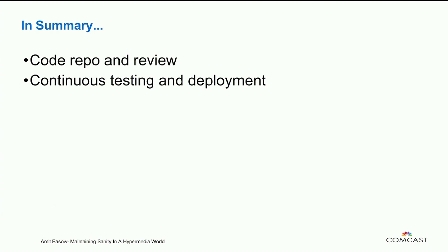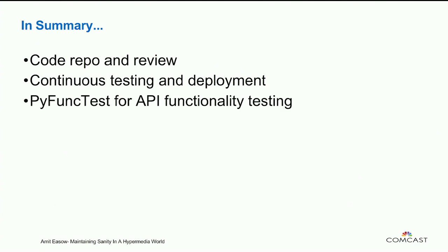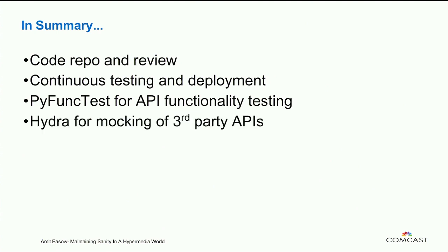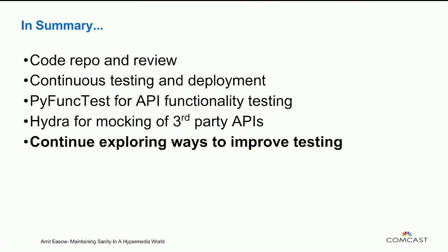In summary, we maintain sanity at Comcast by having a good code repository system and code review. We do continuous testing and deployment. We use Python tests for API functionality testing. We use Hydra for mocking of third-party APIs — and as I mentioned, WireMock is another good option. We are continuing to explore new ways to improve our testing efforts.